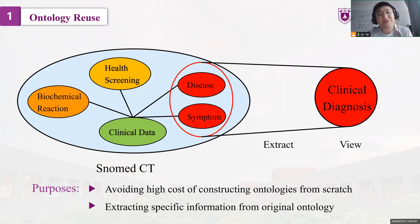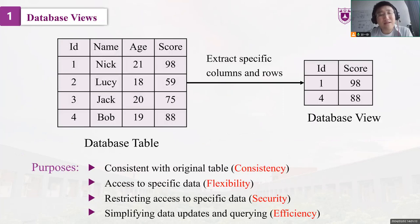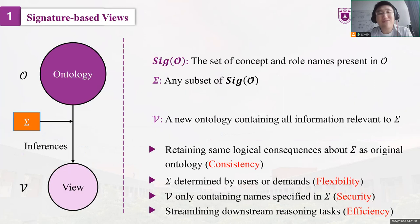Addressing these challenges, this work introduces an efficient method for creating signature-restricted views of ontology through a technique called Uniform Interpolation. Uniform Interpolation is a reasoning service that distills an ontology into its essentials with a selected subsignature. Unlike traditional modularization approaches that may use names outside of the designated signature, Uniform Interpolation generates a condensed version of the ontology that retains the semantics of relevant names while omitting others.